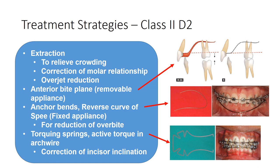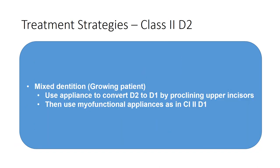The incisor inclination can be corrected using extra torquing springs in fixed appliances, or the archwire can carry active torque adjustment to correct the incisor inclination. If a Class 2 Division 2 is seen in a growing patient in the mixed dentition, an appliance can be used to convert it to a Class 2 Division 1 by proclining the upper incisors, and once that is done, myofunctional appliances can be used similarly to how they would be used in a Class 2 Division 1 case.